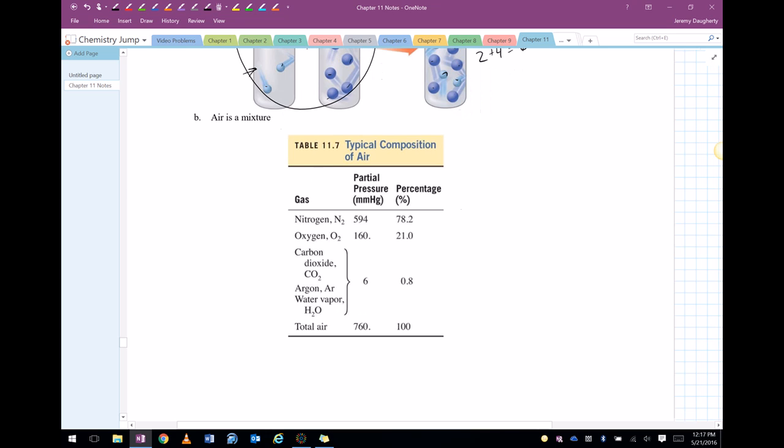So we know that air is a mixture. It's made up of mostly nitrogen, about 80% nitrogen, a little bit of oxygen, right around 20% oxygen, and then the rest is just some other stuff. And so they each have a partial pressure that they exert.